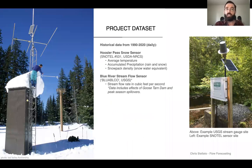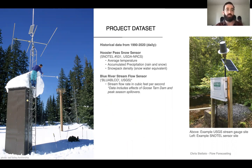A little bit of info about the project dataset. There's 30 years of historical data from two different sensors: the Hoosier Pass Snotel sensor, which provided average temperature, accumulated precipitation, and snowpack density, and the Blue River Streamflow sensor, which provides the historical streamflow rate in cubic feet per second. On the left you can see an example of what a Snotel sensor site looks like, and on the right, an example of a USGS streamflow sensor.